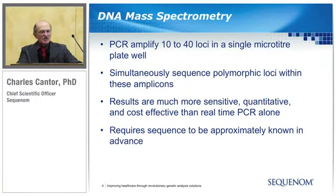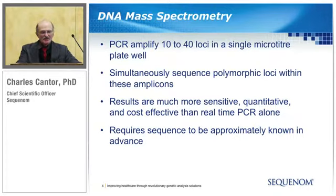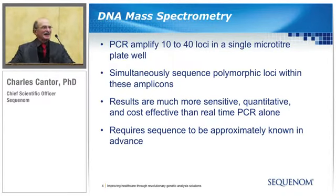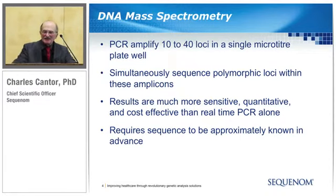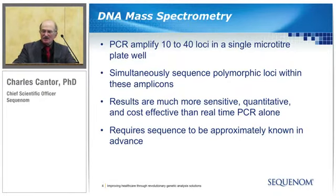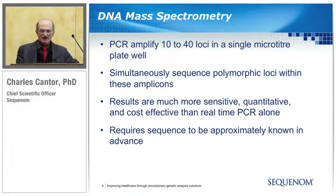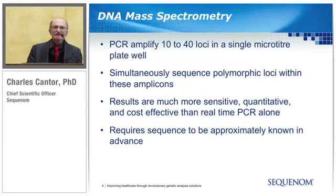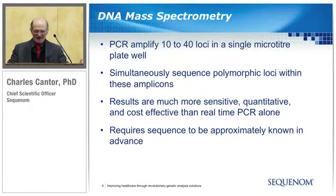Just to remind any of you who are not aware, we do use mass spectrometry to look at mutations or polymorphisms. We do a multiplex single-tube PCR amplification in most cases. Mike Phillips this morning was designing assays at 45-plex, so you can cover a lot of space in the genome in a single microtiter plate well. These amplicons are sequenced, usually by single base sequencing, occasionally by something more complex. It's the sequencing products that we fly into the mass spectrometer. This is very quantitative and very sensitive. But it's not a de novo sequencing method — you have to more or less know in advance what you're looking for.